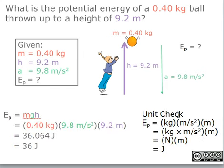As for a unit check, potential energy equals kilograms times meters per second squared times meters. We know that kilograms times meters per second squared equals newtons, and newtons times meters is equal to joules. Therefore, our units are correct.